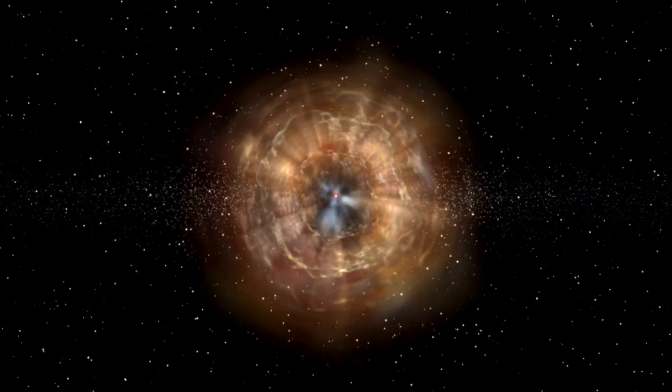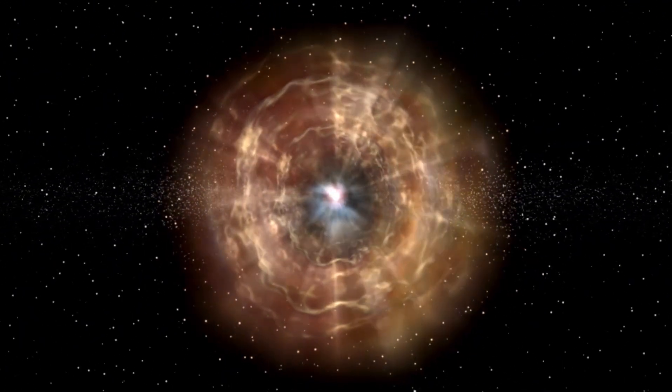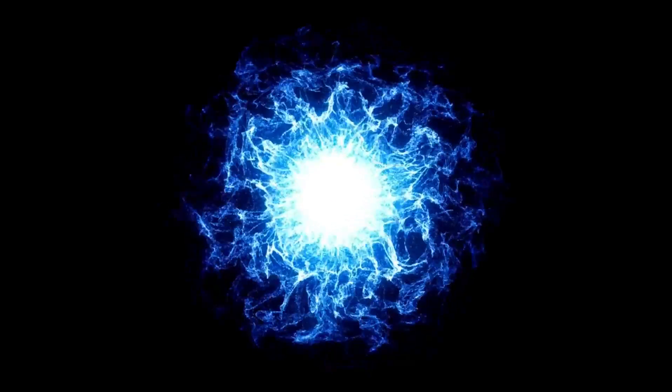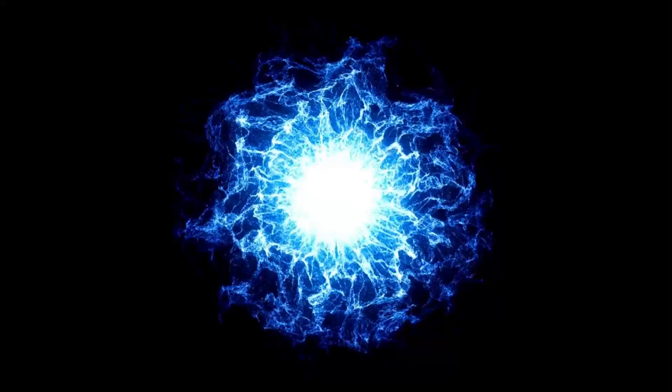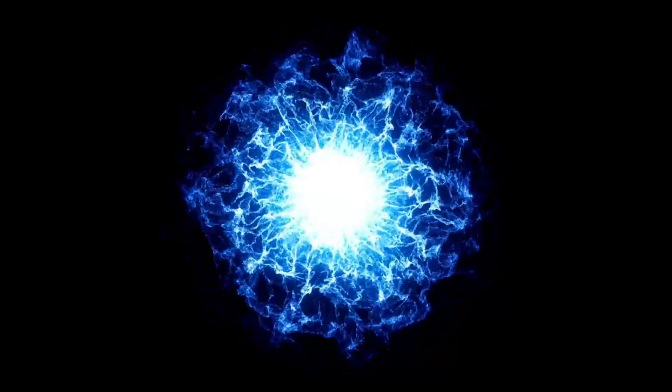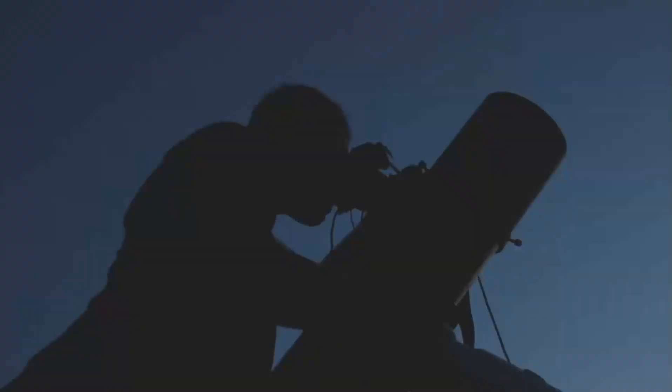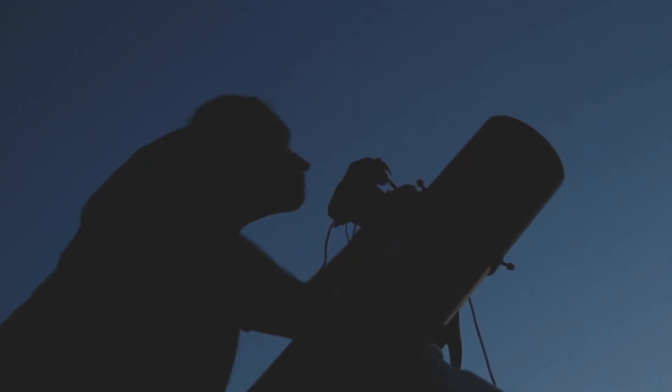Recently, Betelgeuse has exhibited dramatic and irregular changes in brightness, sparking widespread speculation among astronomers and enthusiasts alike. These dimming and brightening episodes are thought to signal the star's imminent demise, culminating in a spectacular supernova.